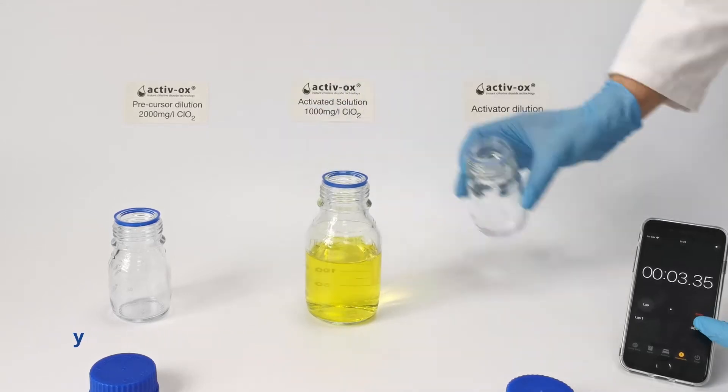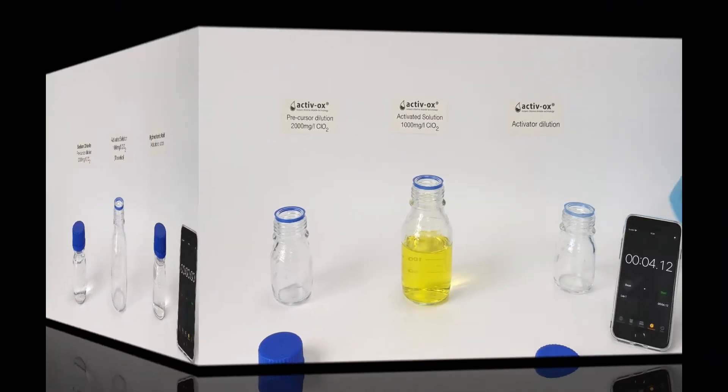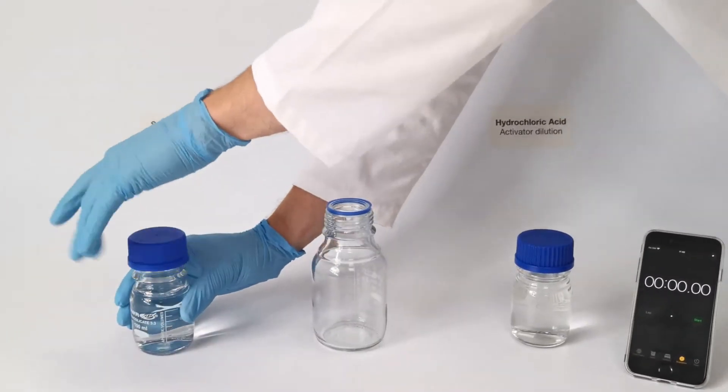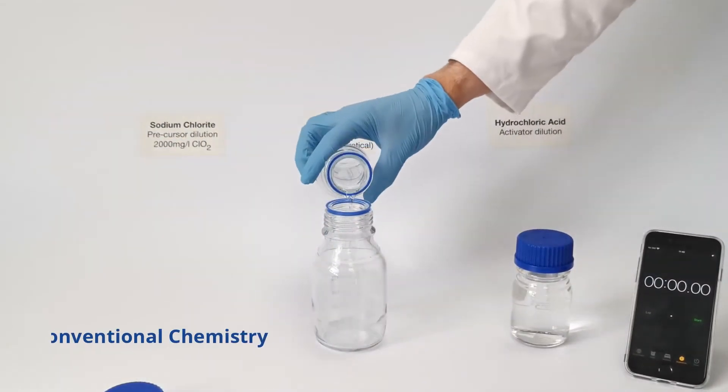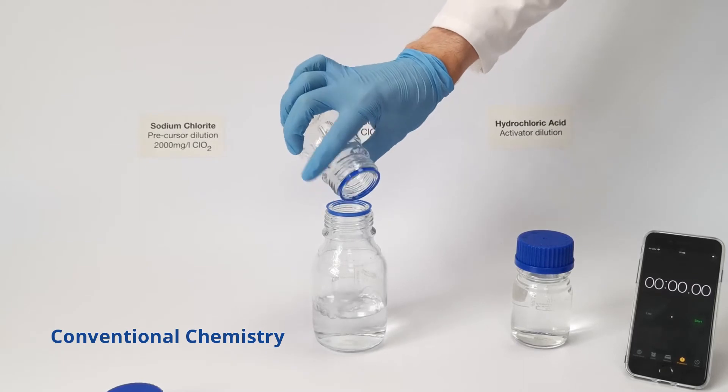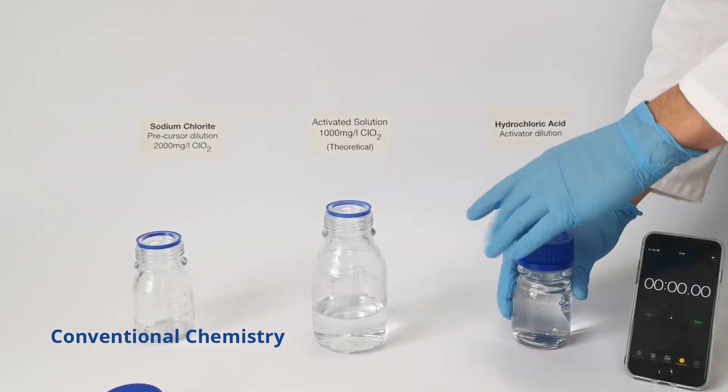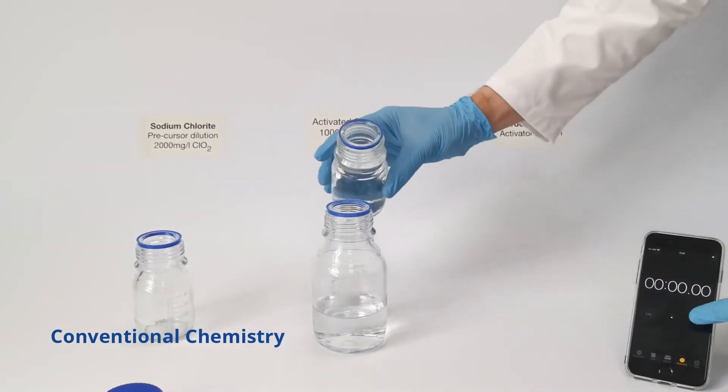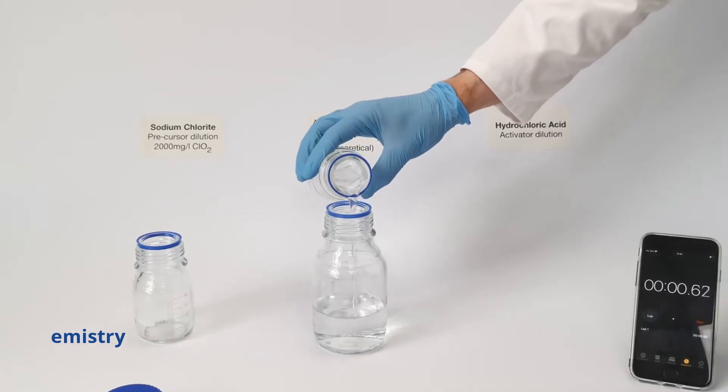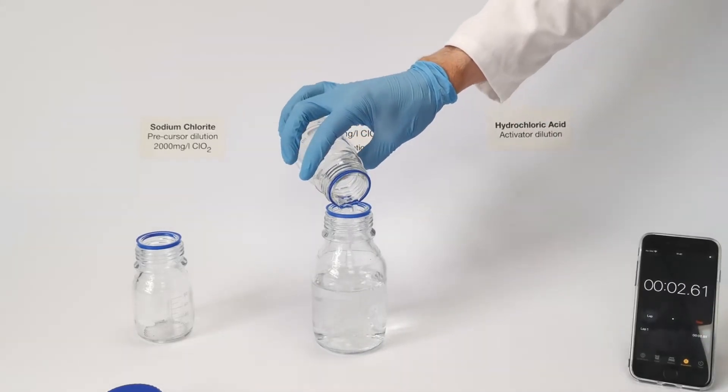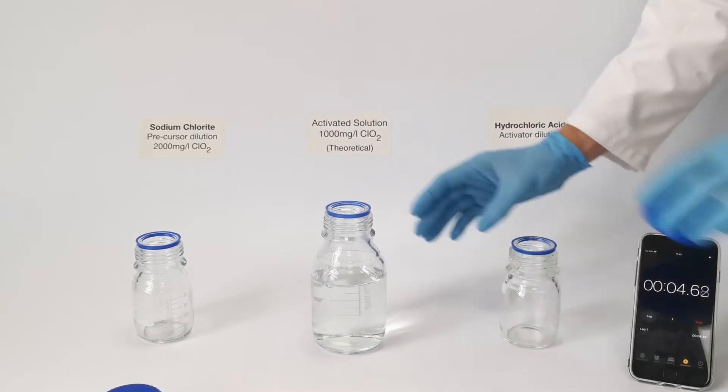The instant reaction is integral to the simplification of the dosing system we'll discuss later. Let's look at conventional chlorine dioxide precursors, sodium chloride and hydrochloric acid. Here you can see the reaction is not instant. In fact, it will take an hour or more to reach its full yield with a much lower conversion rate than Activox.